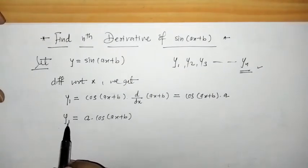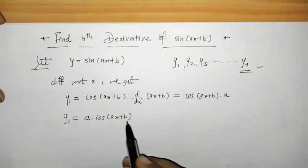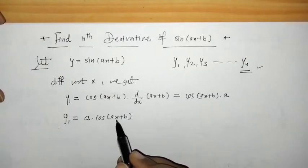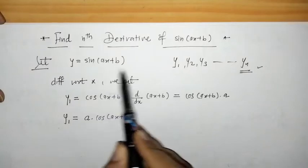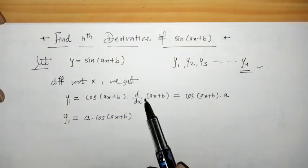Now when we differentiate y1 to get y2, we will get minus sine. And for y3 we will get cosine again. So when we differentiate this function again and again we will get alternating sine and cosine.